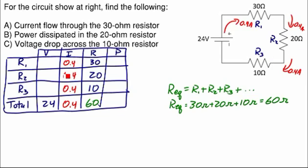When I do that, for the first resistor, 0.4 amps times 30 ohms is 12 volts. For R2, 0.4 amps times 20 ohms is 8 volts. And for R3, 0.4 amps times 10 ohms is 4 volts. So the sum of the potential drops, 12 plus 8 plus 4 equals 24. That works.